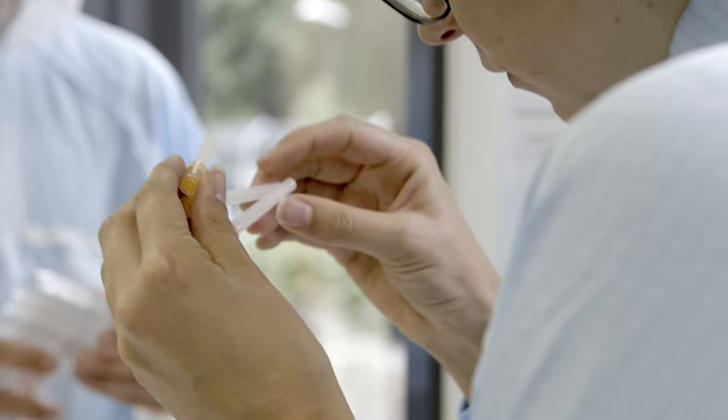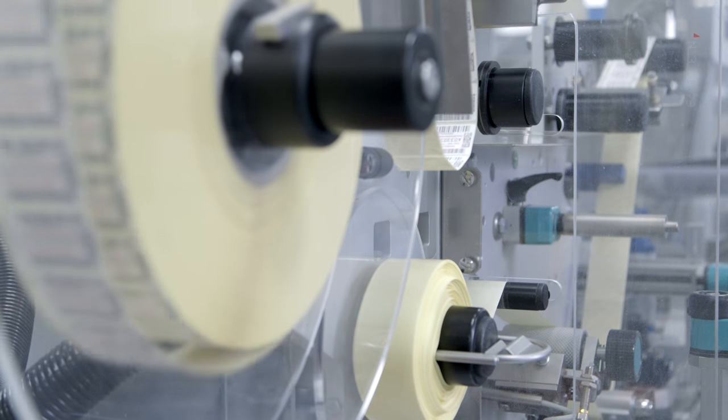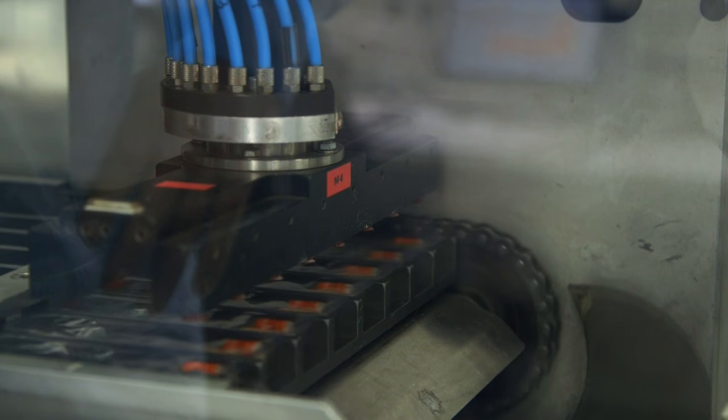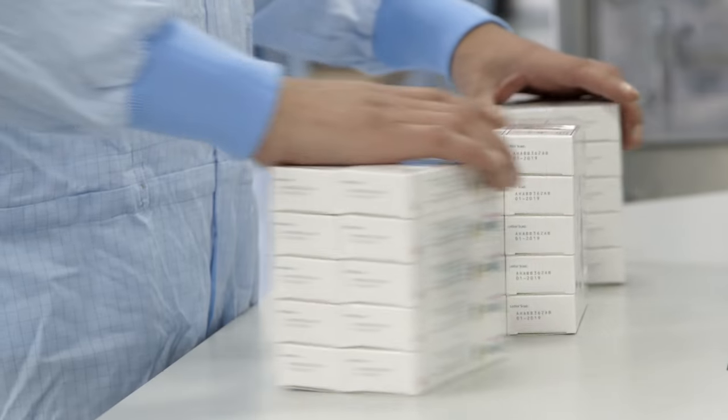The manufacture of our bulk antigen takes us about 30 days, followed by another 30 days which is necessary for the formulation, filling, and packaging of the vaccine.